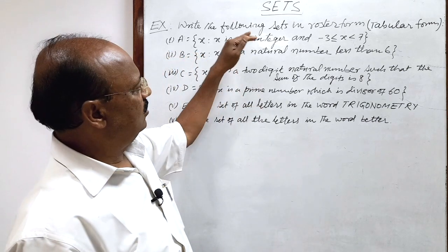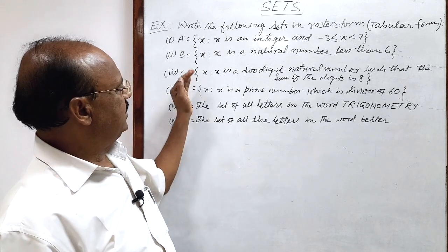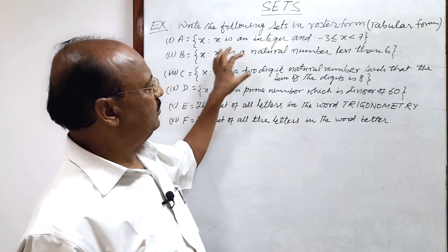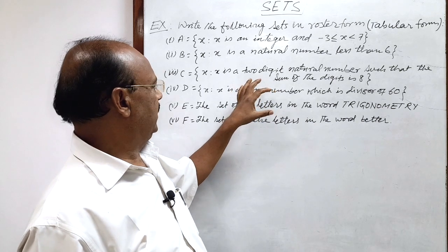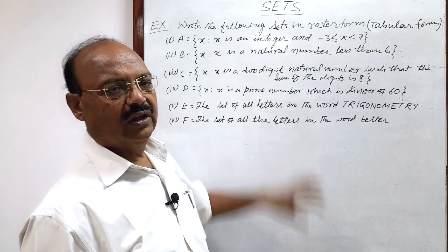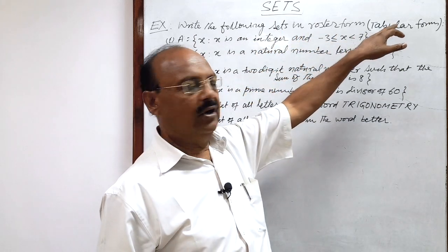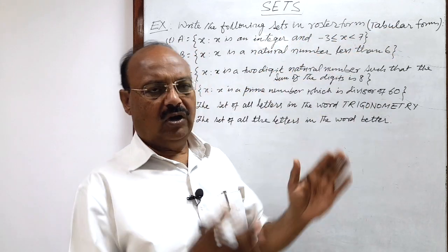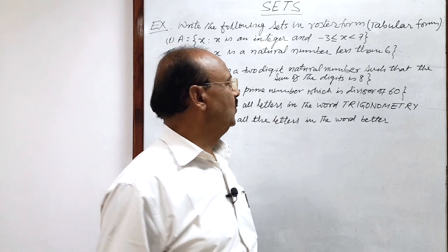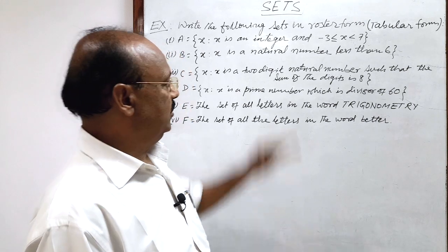Here, all these questions, all these sets are given in set builder form. In set builder form, all elements are not tabulated, not mentioned, but only symbolic properties are mentioned there, properties which is common to every element. So all these sets are given in set builder form and we have to write the sets in roster form or tabular form. In tabular form, all the elements are mentioned, separated by commas inside a curly bracket. Let us see the solution here. Question is very informative. Our concept will be very clear after doing these questions here.